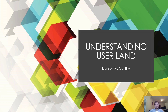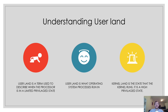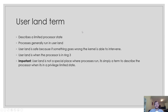Understanding Userland. Userland is a term used to describe when the processor is in a limited privileged state. Userland is what operating system processes run in. Kernelland is the state that the kernel runs in — it is a high privileged state. Let's now explain further what the userland term actually means.